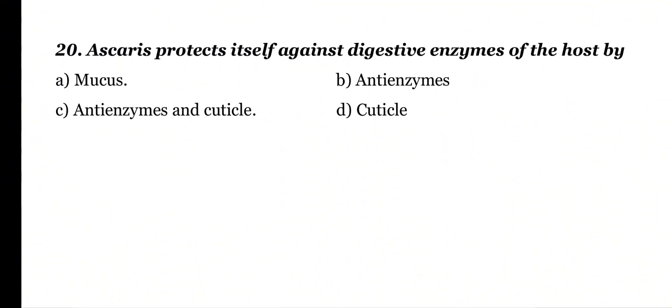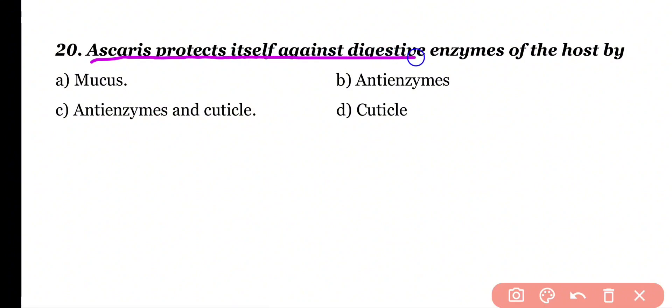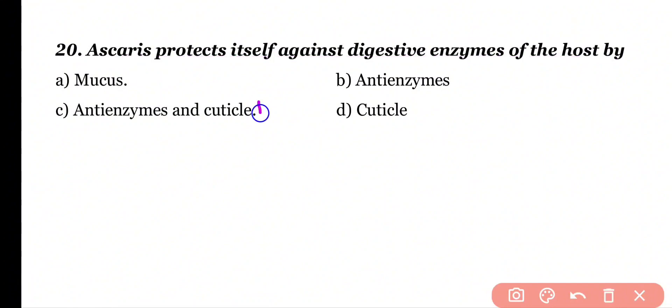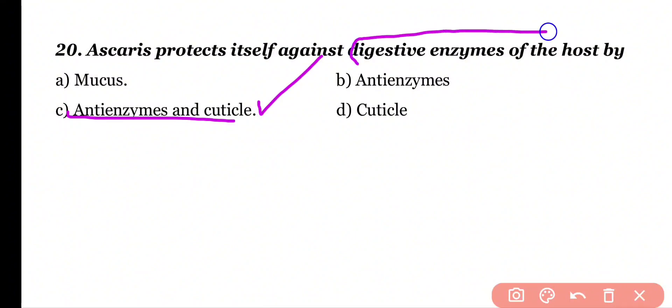Question 20: Ascaris protects itself against the digestive enzymes of the host by mucus, anti-enzymes, anti-enzymes and cuticle, or cuticle only. Correct answer is option C. Ascaris has anti-enzymes and cuticle which protect it from the digestive enzymes of the host.